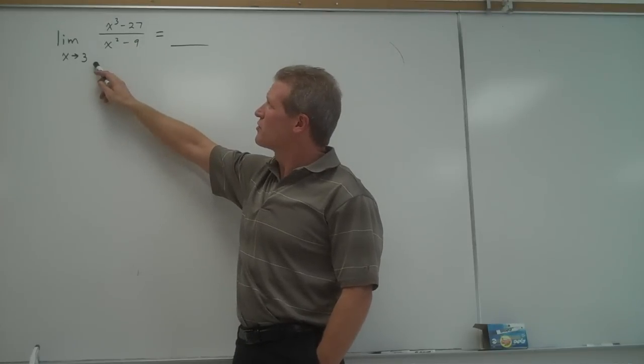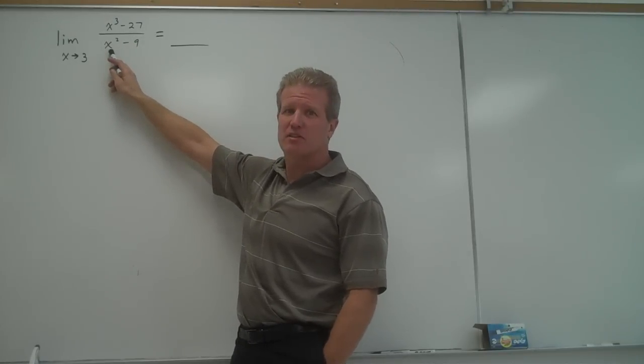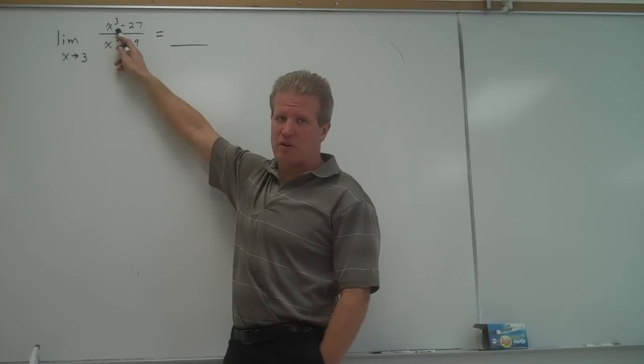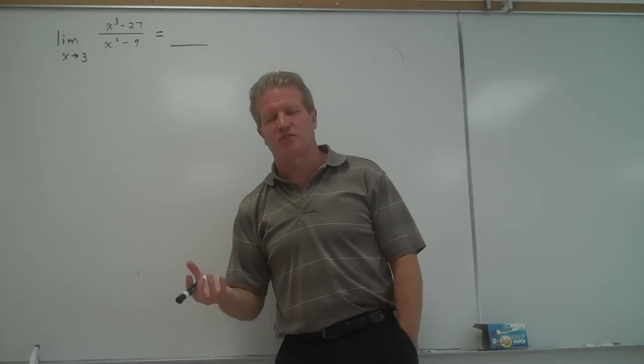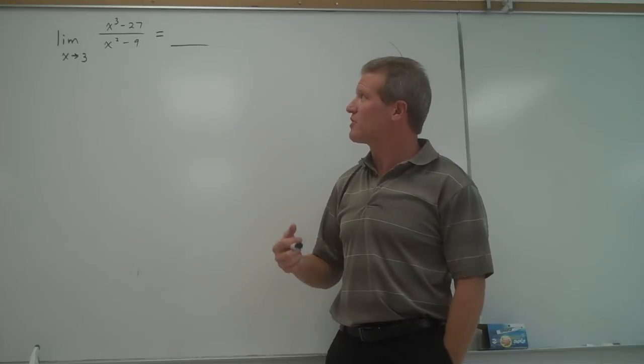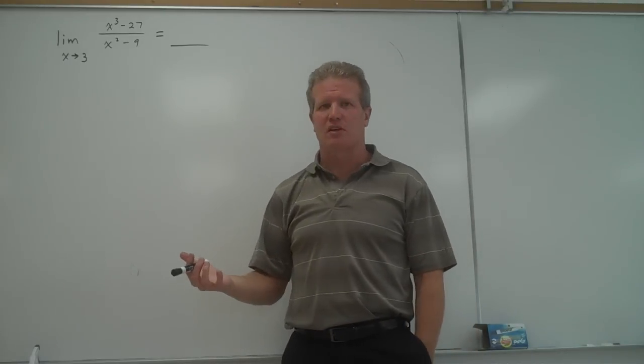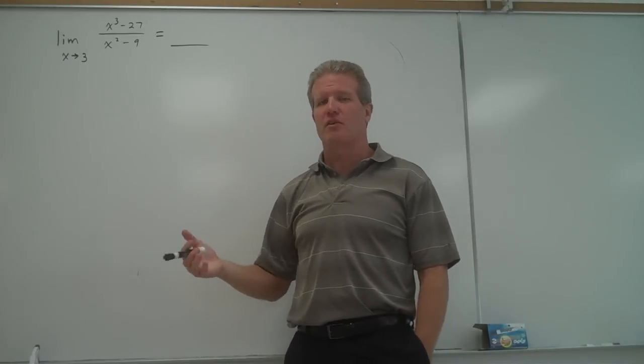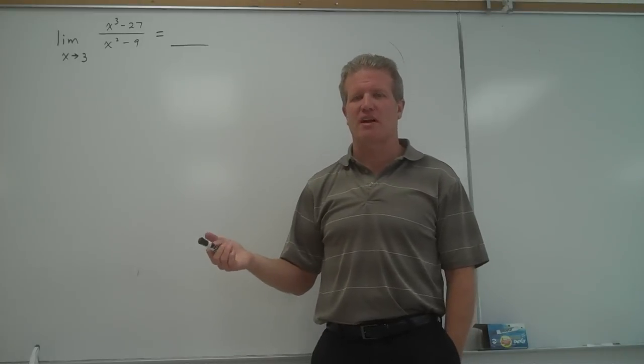And if we plug 3 in for x in the denominator, we get 0. If we plug 3 in the numerator, we also get 0. So we can't put 0 over 0 down as an answer. We have to figure out what's going on. If we're getting 0 in the numerator and denominator, that means there's a hole in the graph at 3.